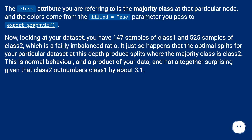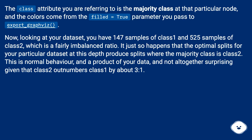It just so happens that the optimal splits for your particular dataset at this depth produce splits where the majority class is class 2. This is normal behavior and a product of your data, and not altogether surprising given that class 2 outnumbers class 1 by about 3:1.